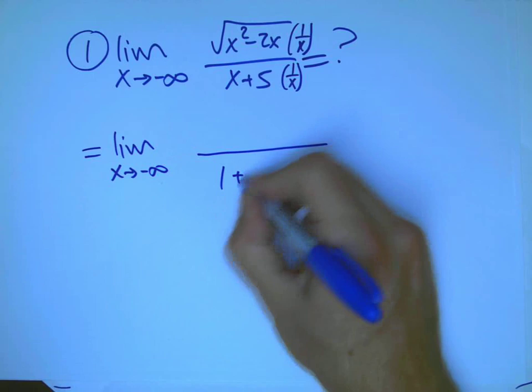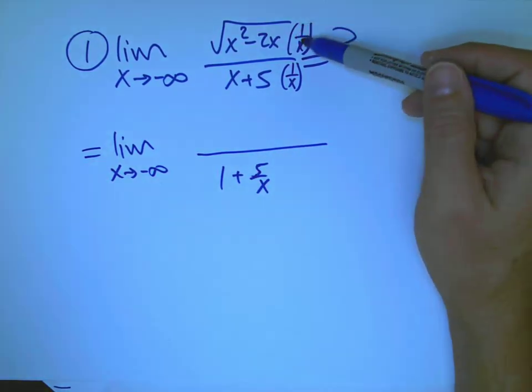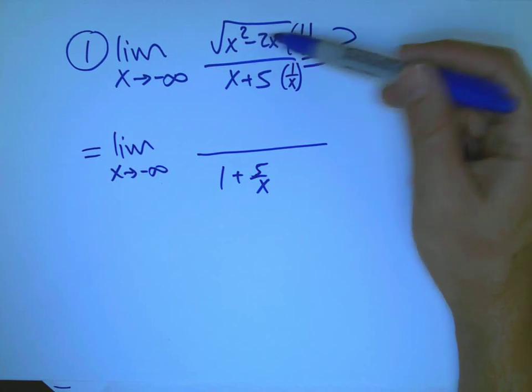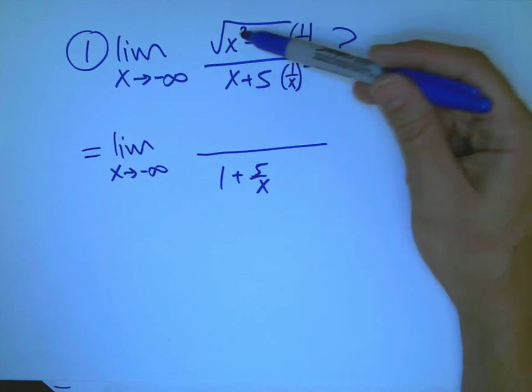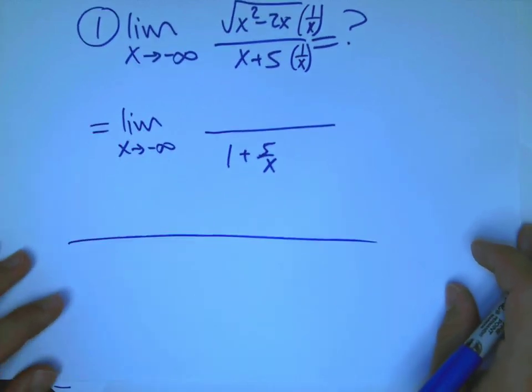On the bottom, it's 1 plus 5 over x. On the top, we have to be real careful. You might think this is just going to come in and be x squared minus 2x over x, but it's going inside a square root. So, let me put down here a little separate calculation.